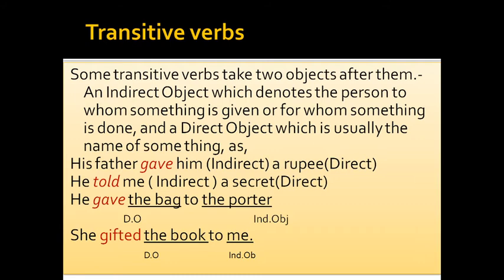Some transitive verbs take two objects after them. Objects are also of two kinds: direct object and indirect object. Transitive verbs like give, ask, offer, promise, and tell take two objects after them. The indirect object denotes the person to whom something is given or for whom something is done. The direct object is usually the name of a thing. So the indirect object is directly related to a person, and the direct object is the name of a thing.